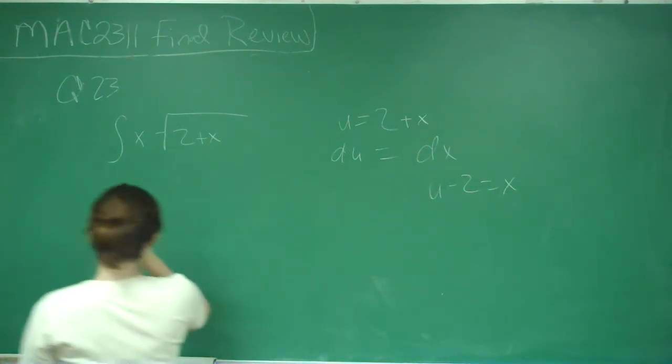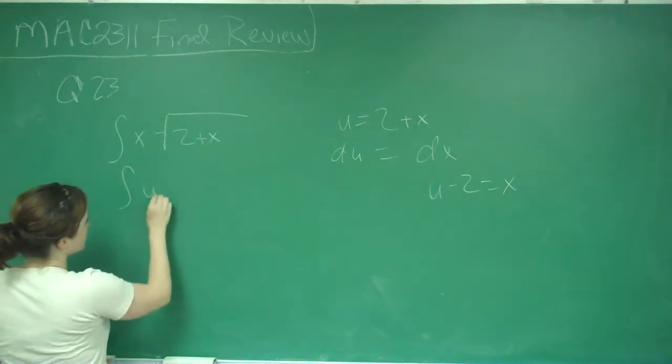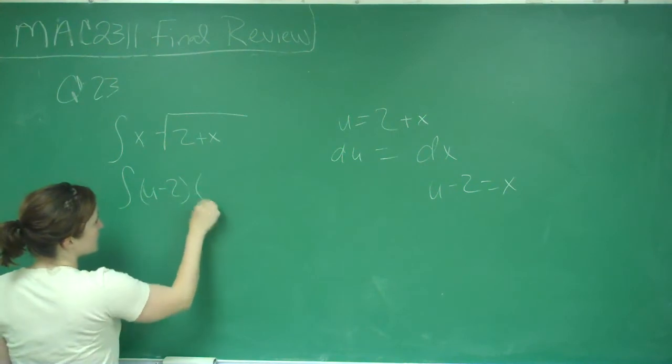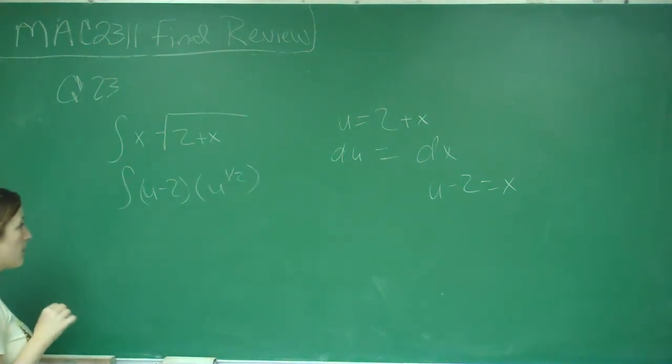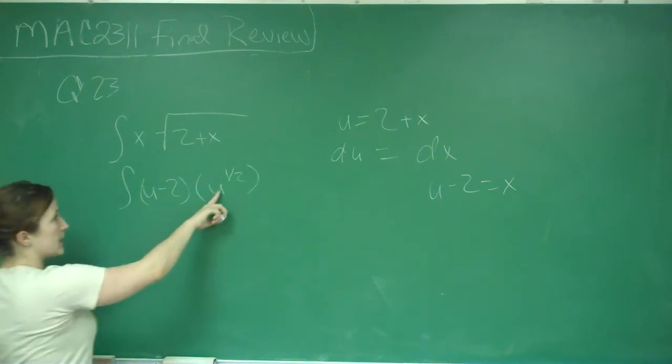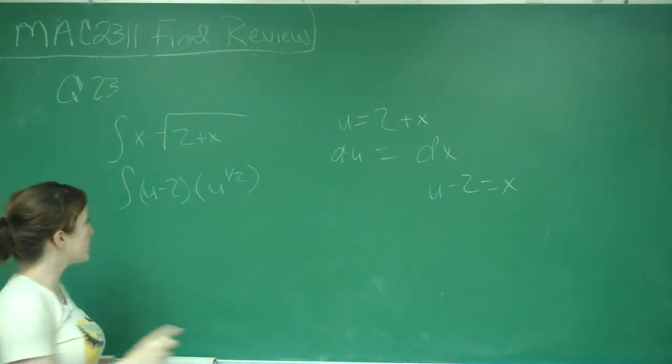So this becomes the integral of u minus 2 times u to the 1/2. Now that u has become the power under the square root instead of being a function, we can distribute that in.